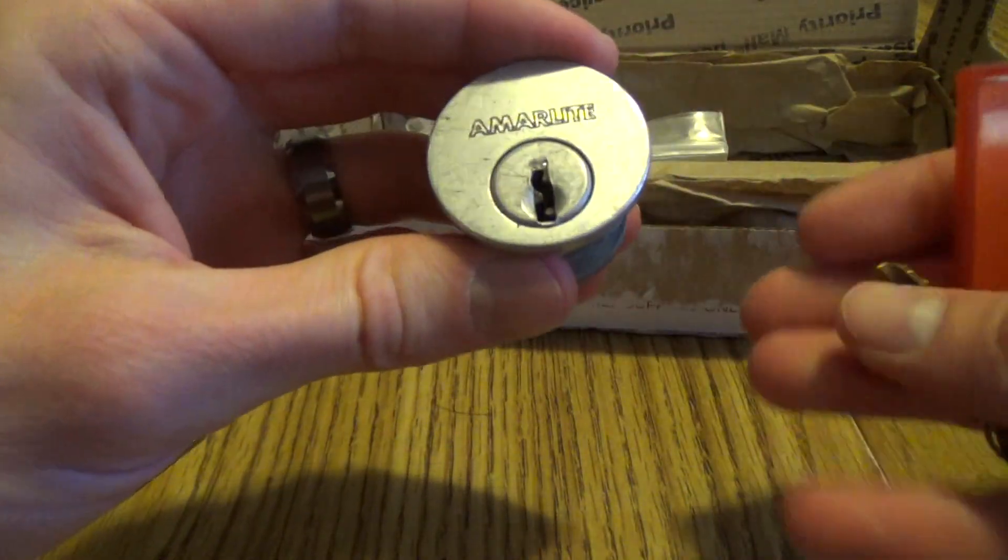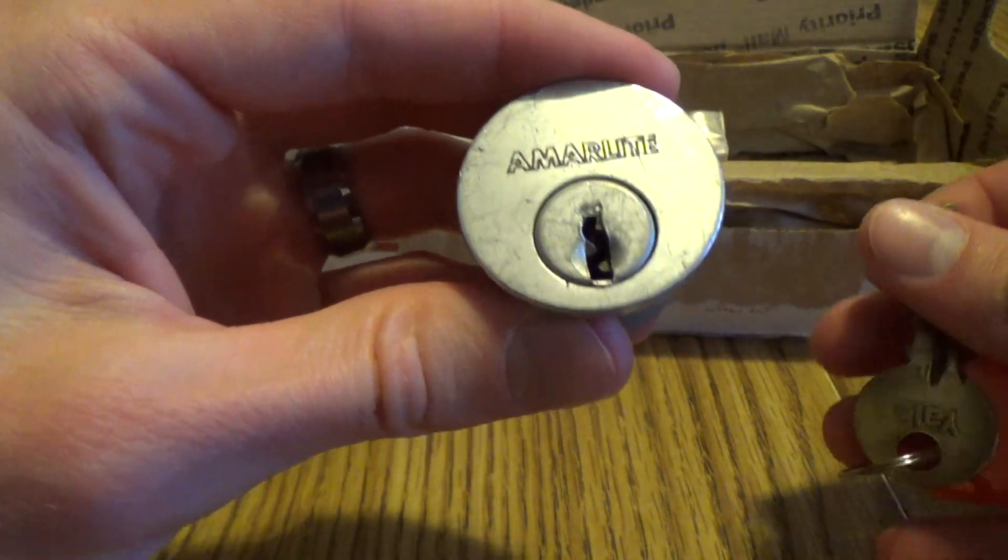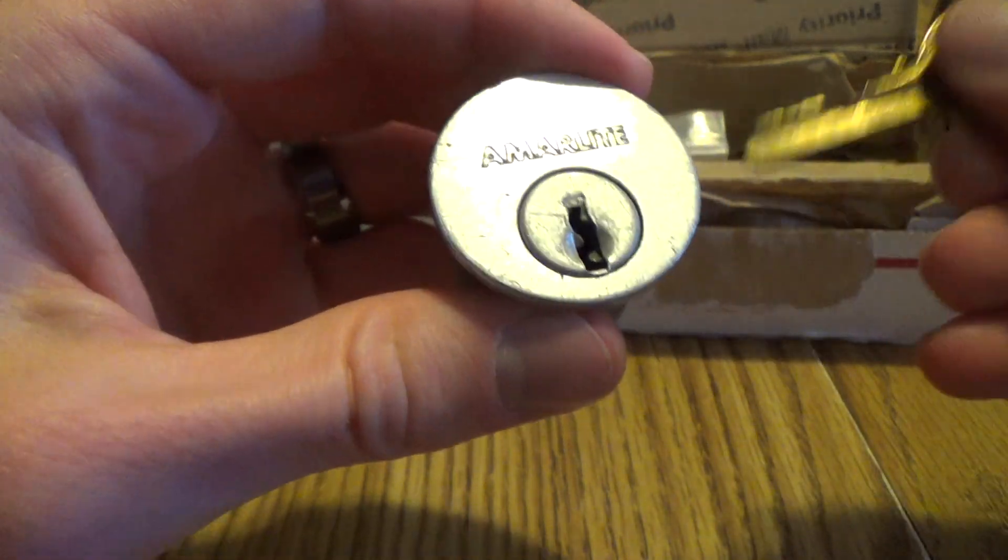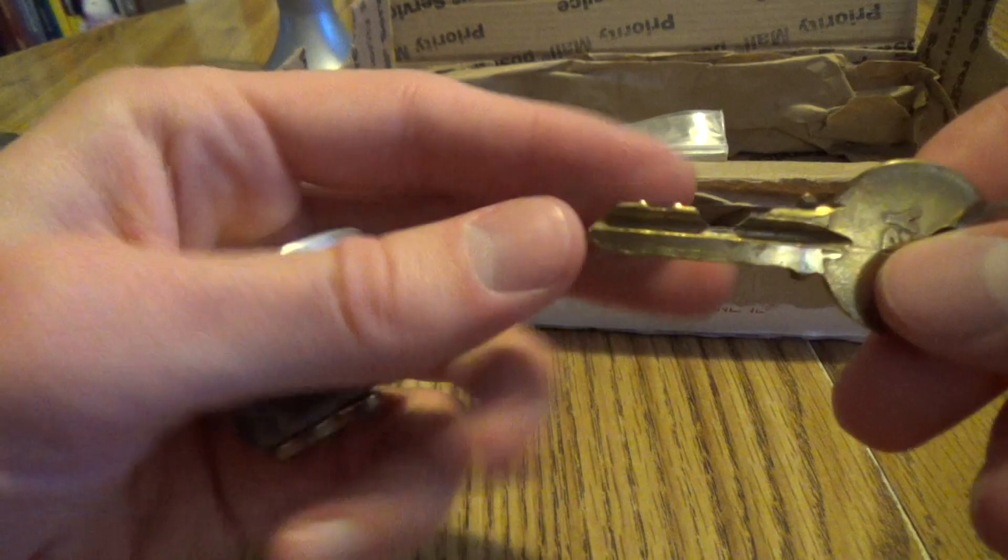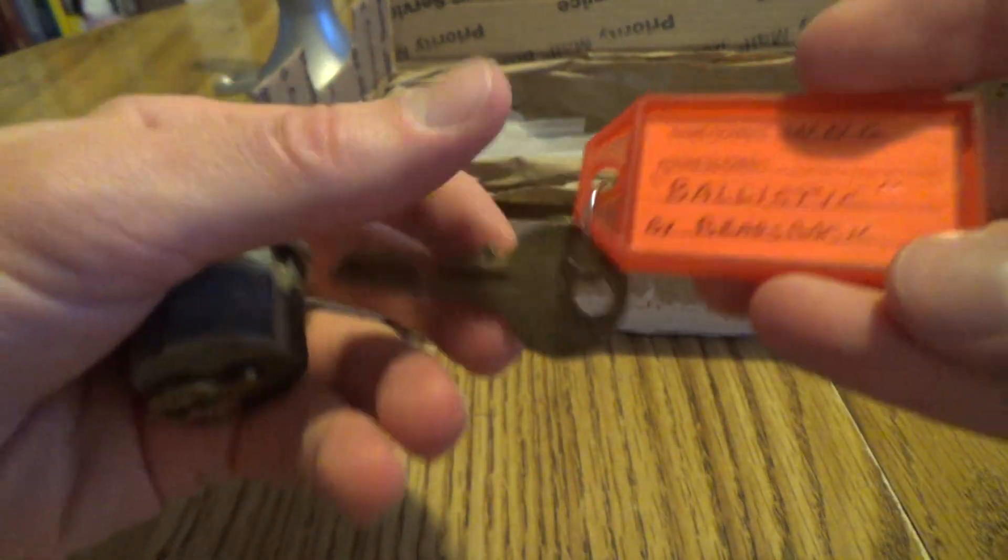Let's see what we have here. An Ammar Light. I'm not familiar with that brand. It's the Yale Keyway, though. Beautiful. Look at that. That should be really fun.